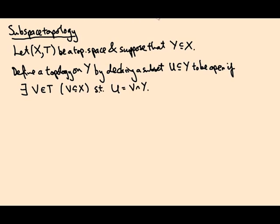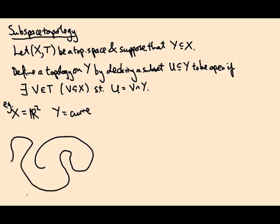Let's do an example. Suppose X is the plane R2 equipped with its metric topology from the Euclidean metric, and Y is just a sub-curve. What might an open subset of Y look like? I just take an open subset of X, like a ball, and intersect it with Y, and that gives me a little interval inside the curve. An open ball gives something like an open interval — those are the open sets you get in Y.